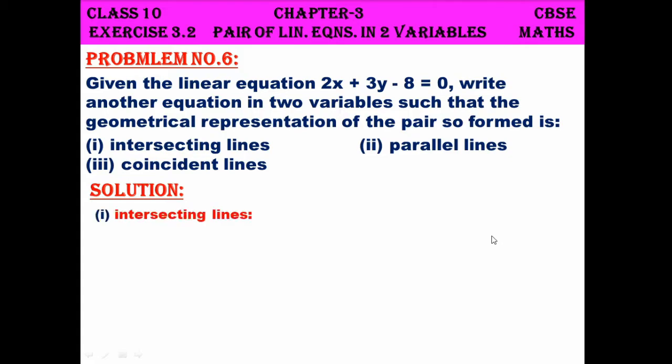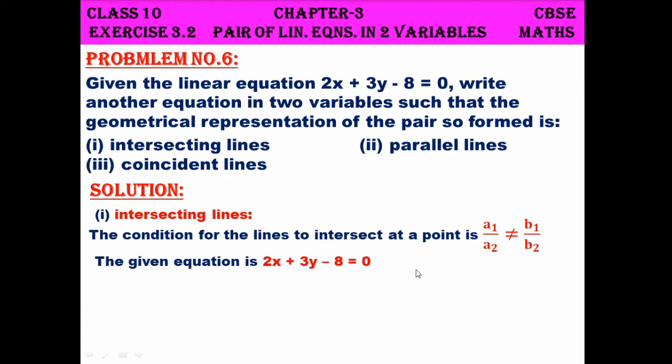Now let us consider the first subdivision: intersecting lines. What is the condition for a pair of lines to intersect? It is a1 by a2 not equal to b1 by b2. The given line is 2x plus 3y minus 8 equals 0.